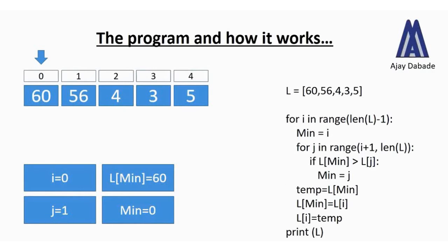The value of j starts at 1 and goes till 4, since len of l is 5. Inside the loop we check l[min] — which is 60 — and if it is greater than l[j] (j=1, which is 56), we assign the value of j to min. You can see the value of min has now become 1, and then j increments to 2.